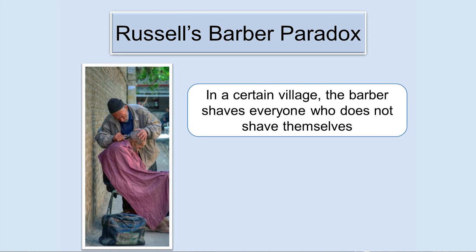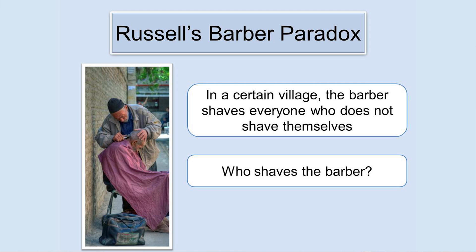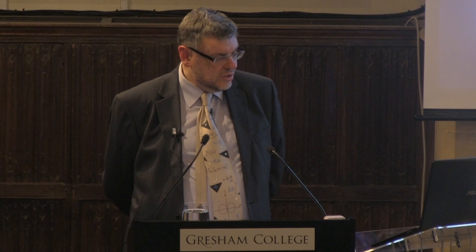Russell's paradox was a disaster for Frege, who had to insert a note into his two-volume book — then in press — noting that Russell's example had defeated the whole work, although some people now feel that was an overreaction. It entered popular as well as mathematical culture, often recast as the barber paradox: in a certain village, the barber shaves all and only those who do not shave themselves. So who shaves the barber? If he shaves himself, then by proposition he is not shaved by the barber, so he doesn't shave himself.